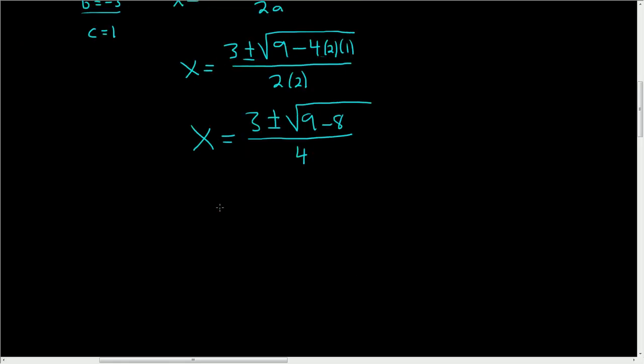So X is equal to 3 plus or minus, 9 minus 8 is 1, so we get the square root of 1 over 4. So X is equal to 3 plus or minus 1 over 4.